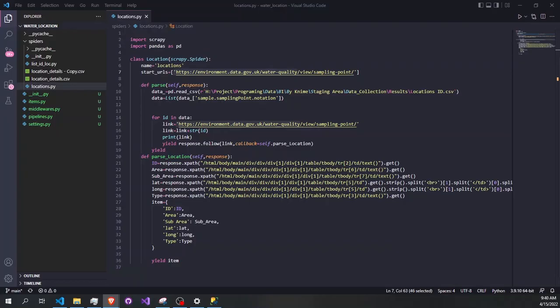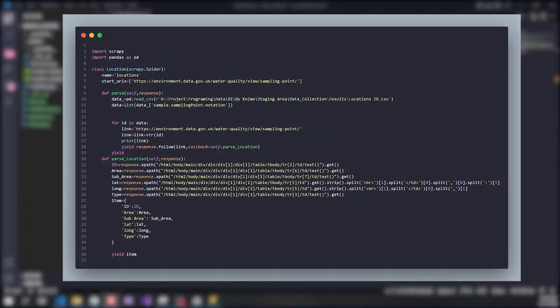So I began to write scraping code in Python using Scrapy. The concept is simple: each water location has an ID which is used as a string.